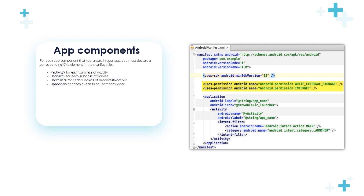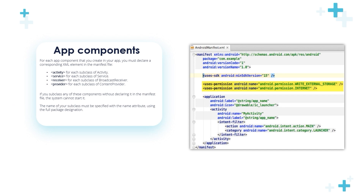A service tag for each subclass of service. If you create a broadcast receiver, you should use the receiver tag, and the provider tag for each subclass of content provider. If you subclass any of these components without declaring it in the manifest file, the system cannot start. The name of your subclass must be specified with the name attribute using the full package designation.